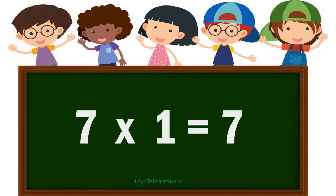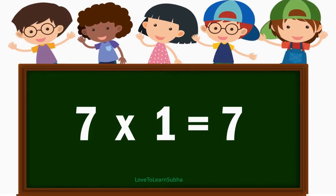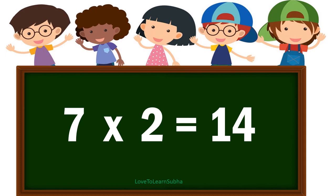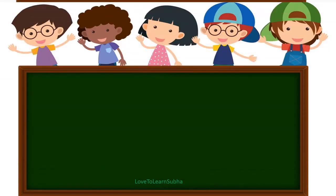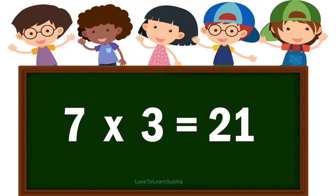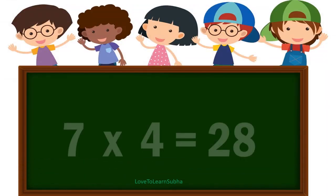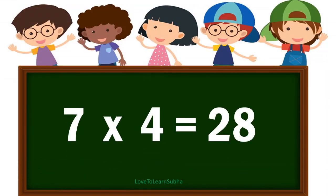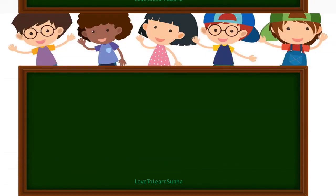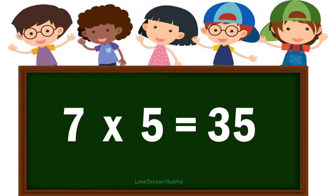7 1s are 7. 7 2s are 14. 7 3s are 21. 7 4s are 28. 7 5s are 35.